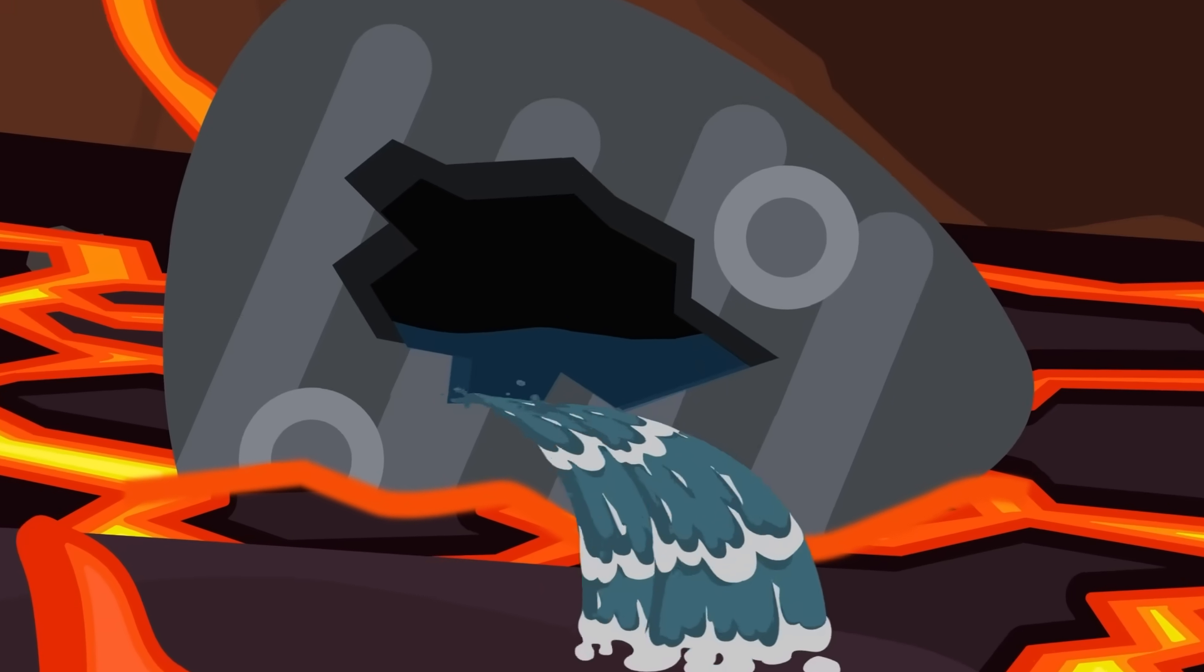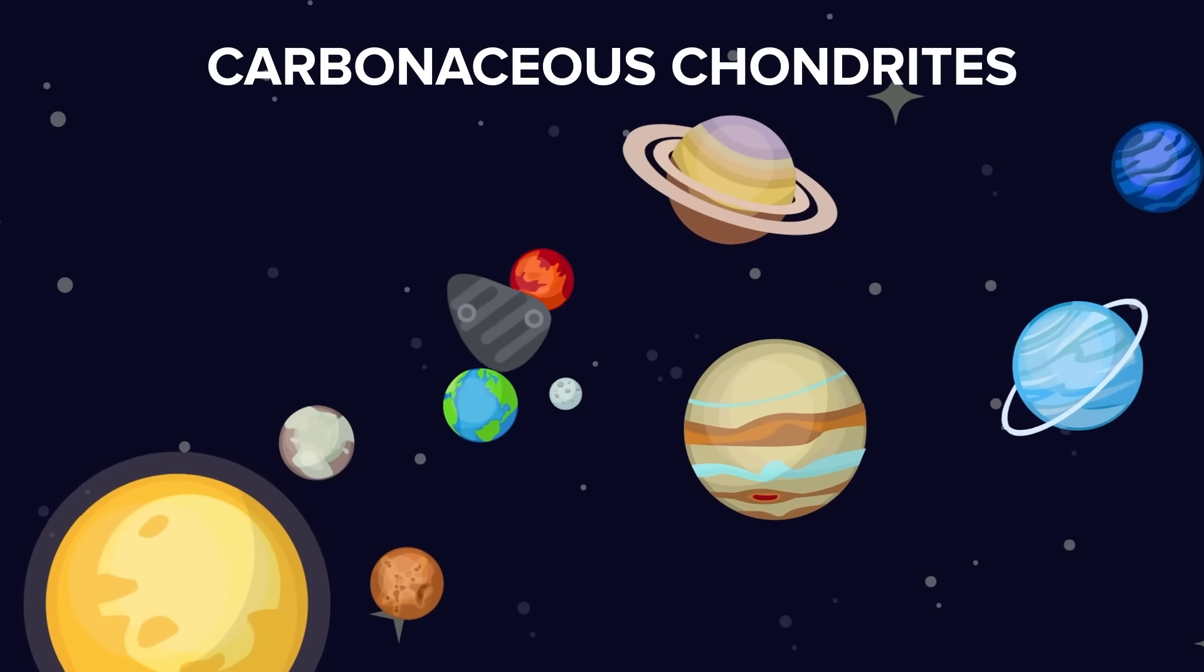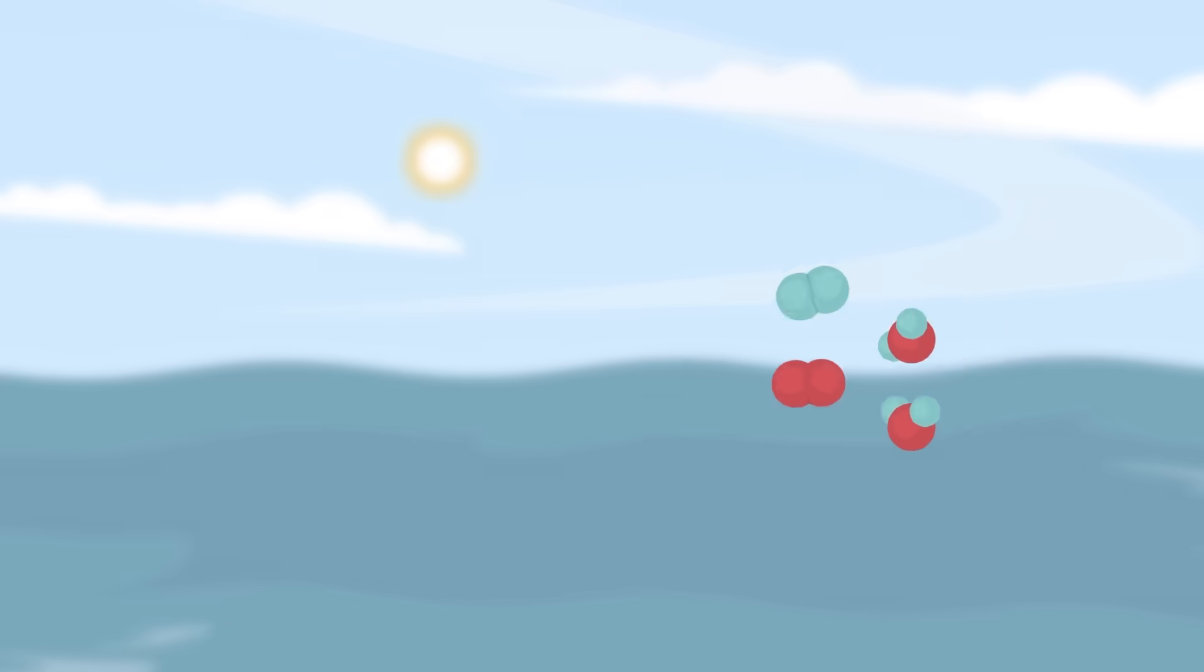Most scientists believe asteroids are the primary source of Earth's water, ranging from the massive ones that hit the Earth early on to smaller ones. The oldest meteorites in the solar system, known as carbonaceous chondrites, have isotope levels that resemble sea water.